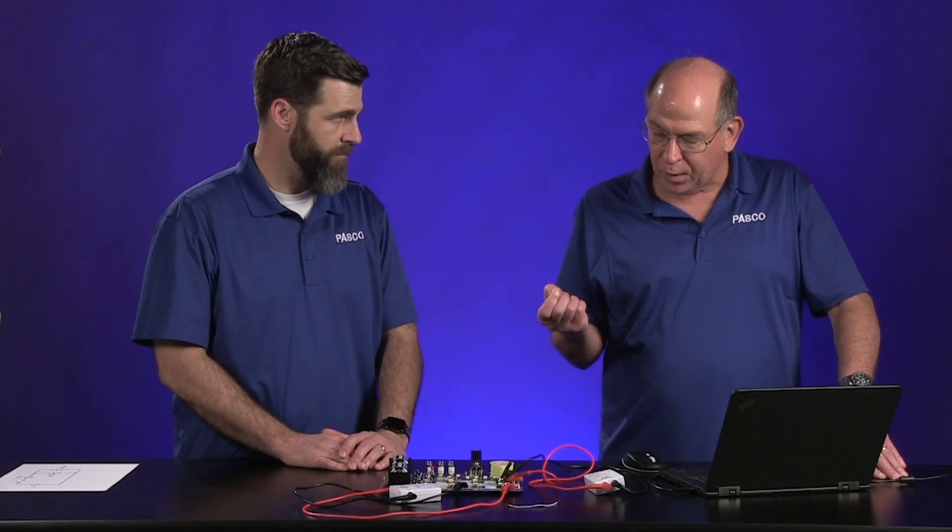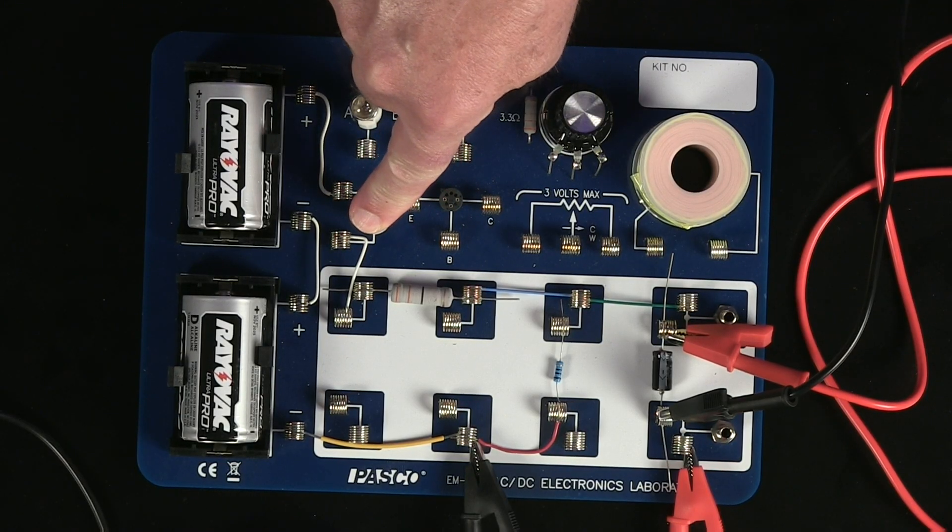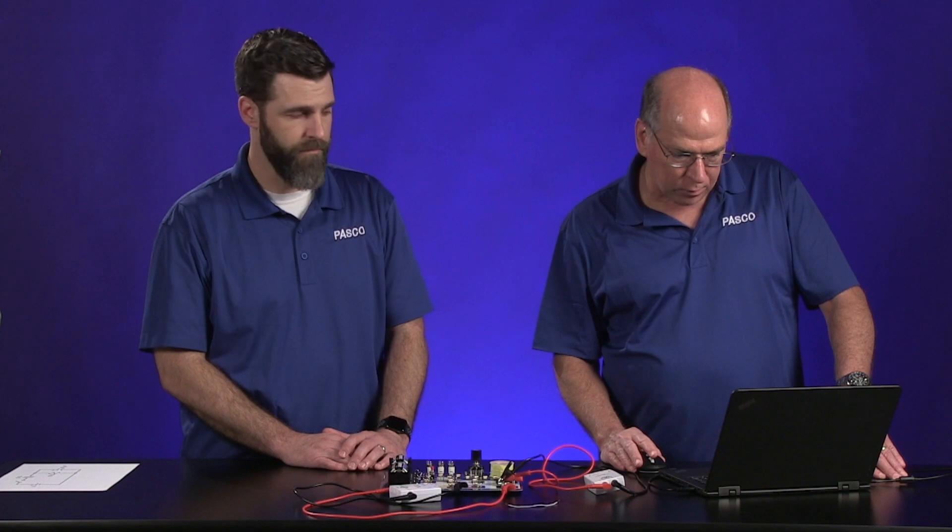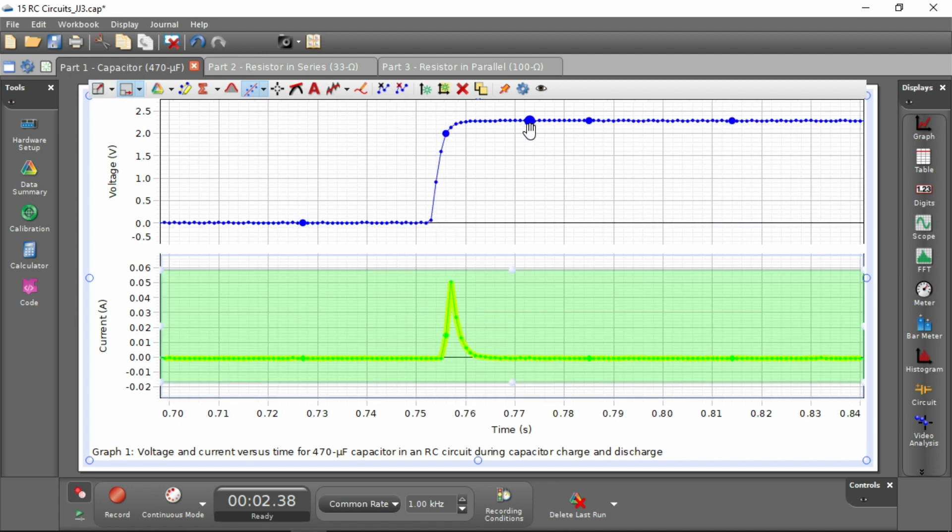And then when you release that switch, so this kind of switch makes a connection when you press it. And then when you let go, it disconnects. And so the voltage went to zero and then the current flowed again very quickly and then was gone. Right. We can take a closer look at it. This is something you'll want to do when you're analyzing this data. We're going to give you all this data. So I have put the selection box around that and I want to blow it up. So I'm going to hit auto scale.